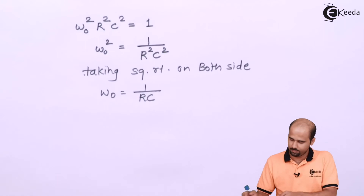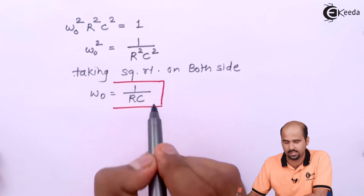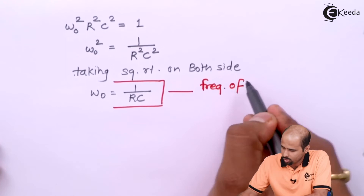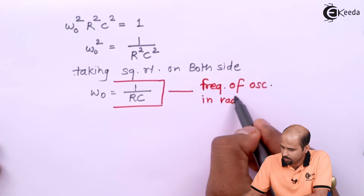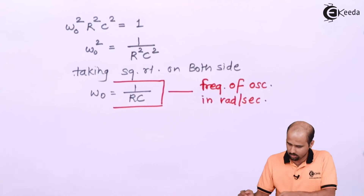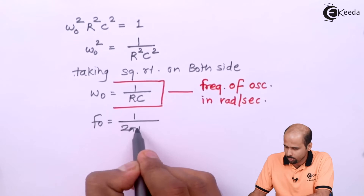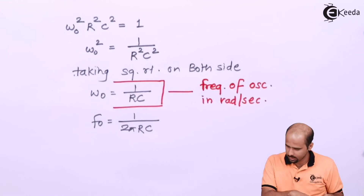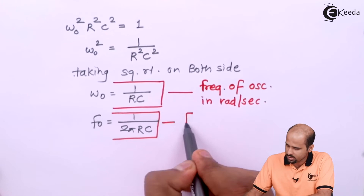This is the frequency of oscillation in radians per second. If you are taking the frequency of oscillation in hertz, then F₀ is equal to 1 upon 2π into R and C. So here we can say this is the frequency of oscillation in hertz.